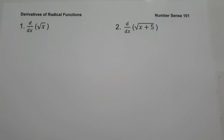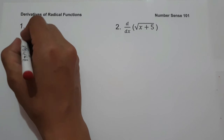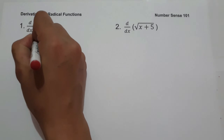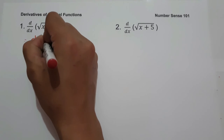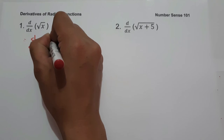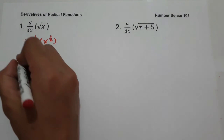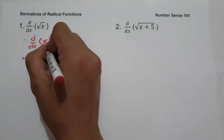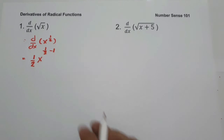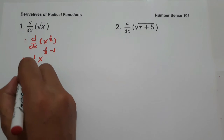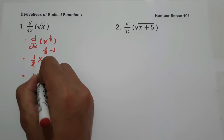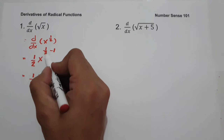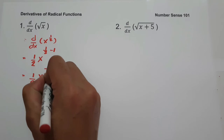On number 1, what is the derivative of square root of x? To find the derivative of square root of x, we are going to write this one as the derivative of x raised to 1 half. And then to simplify, let us have 1 half, x raised to 1 half minus 1, that is negative 1 half.